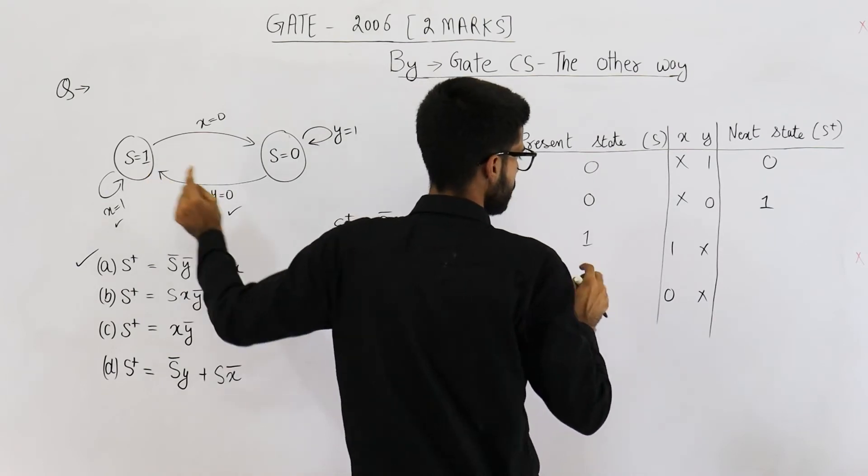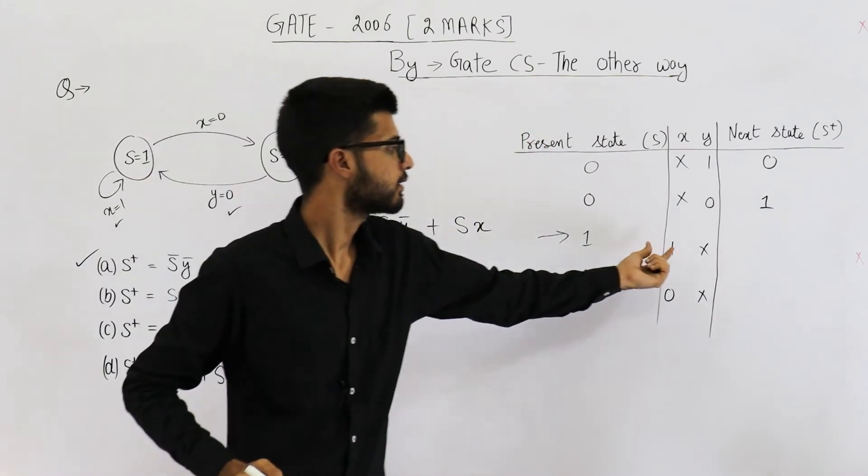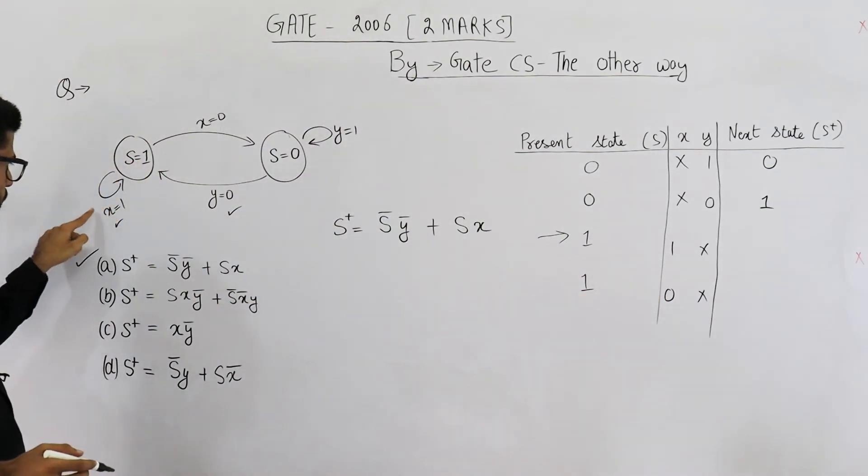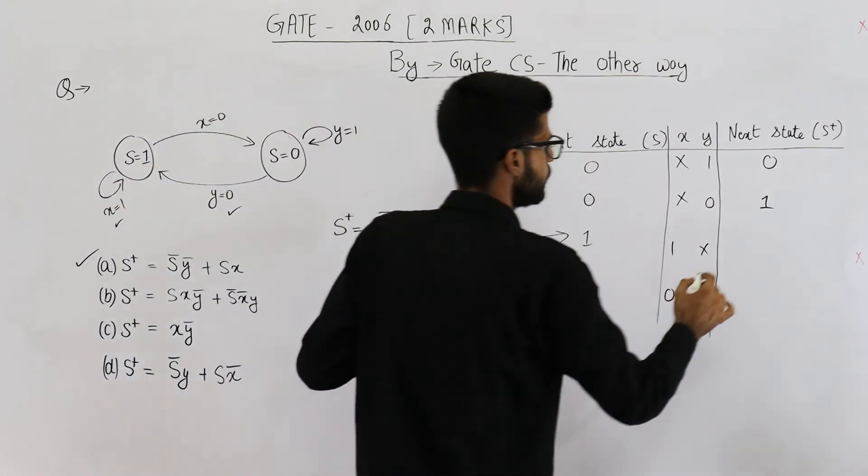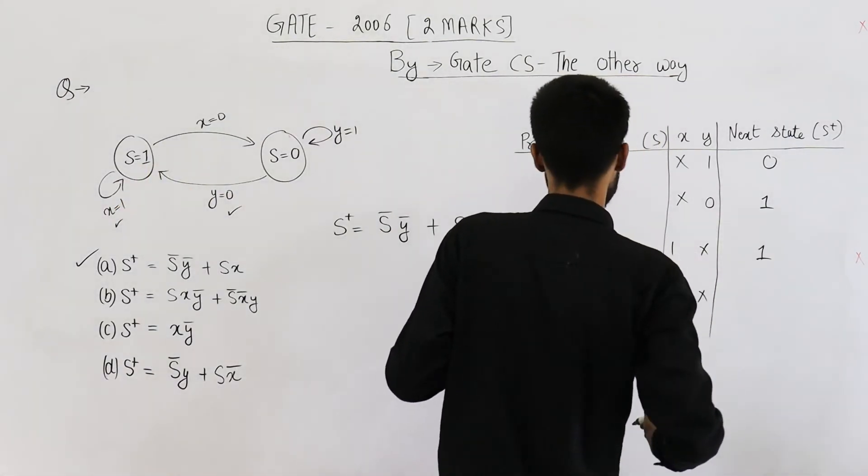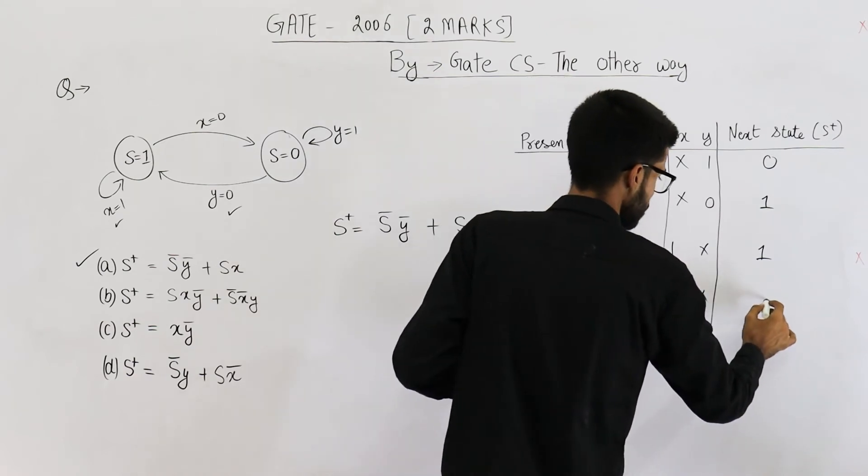Now if current state is 1, that means this row and x is 1. Current state is 1, x is 1, that means this transition is taken, you will be on this state only. So next state will be 1. What if value of x is 0? Next state will be 0.